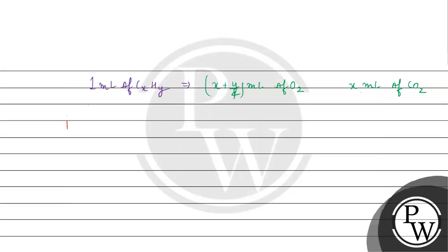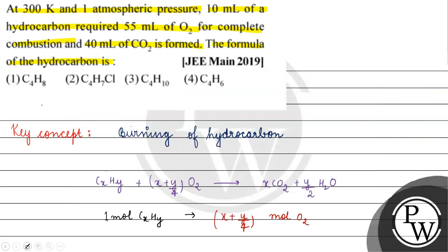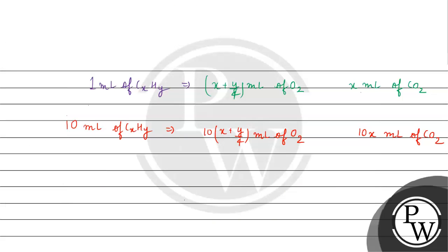If we have 10 ml of hydrocarbon, then 10(x + y/4) ml of oxygen is used, and 10x ml of carbon dioxide is formed. But according to the question, 40 ml of carbon dioxide is formed. So we can write: 10x = 40, and therefore x = 4.